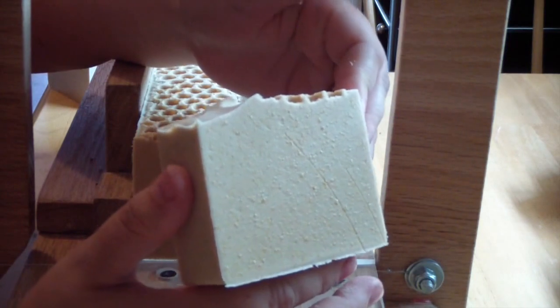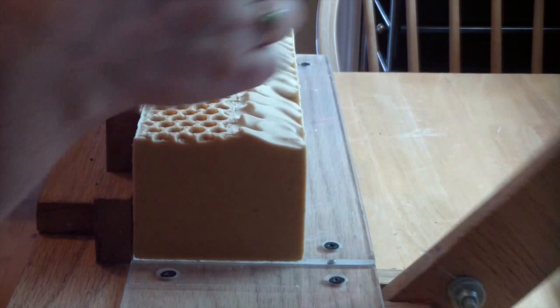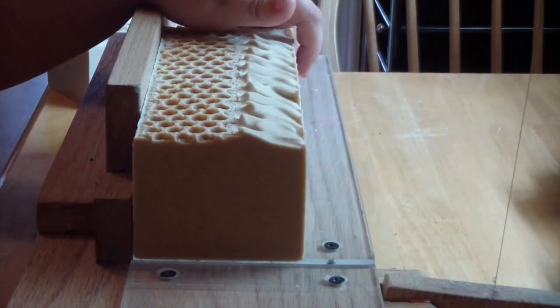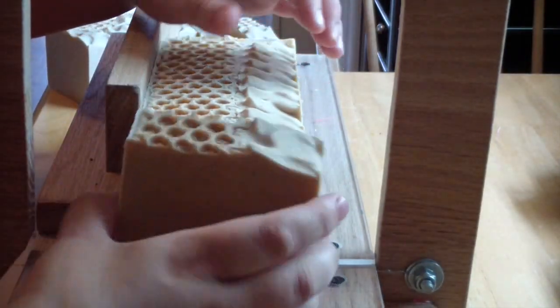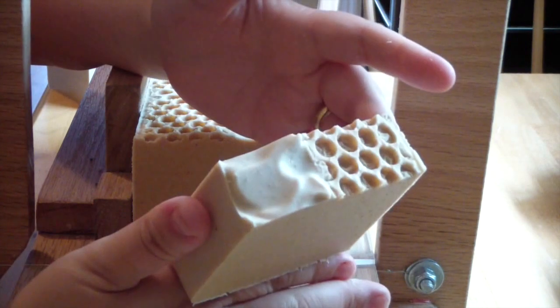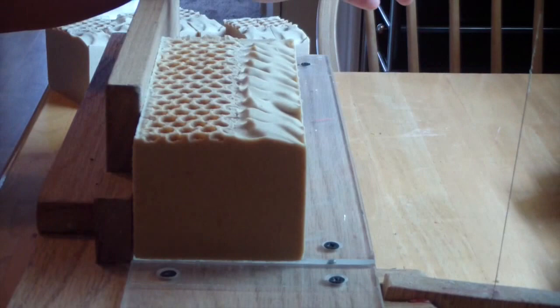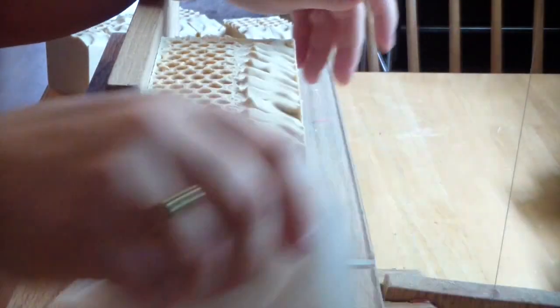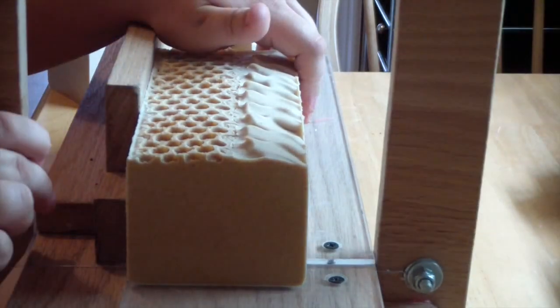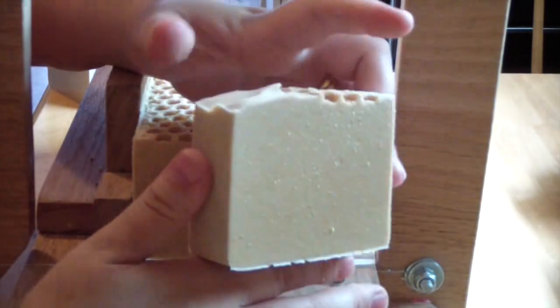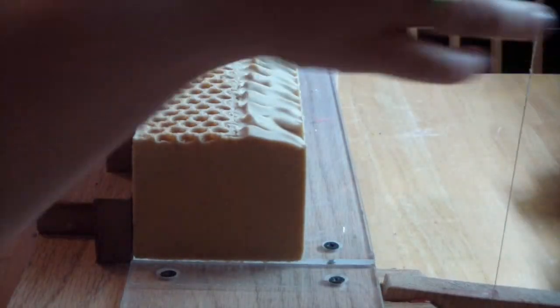But, yeah, I put colloidal oatmeal, kale and clay, ground oats in a coffee grinder. Put those in there. This is just like one of those soaps that is just luxurious and yummy for our skin. And, it's a favorite.